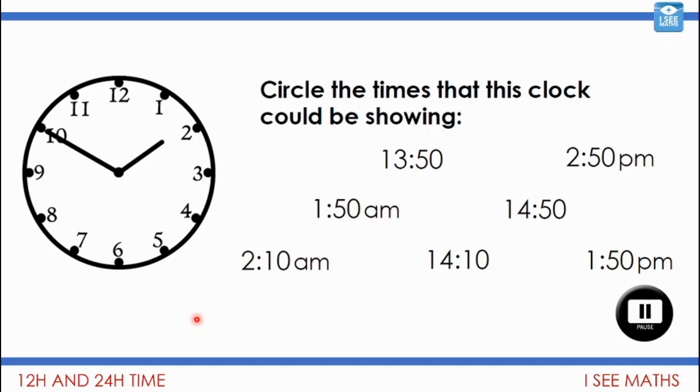Let's have a look at the times it could be. I'm gonna cross off 2:10 and 14:10. I know it's not that. The minute hand is pointing at the 10, but of course that's 10 lots of five—50 minutes—so it's got to be one of these times with a 50, not one of the times with a 10. And then I guess I just need to look at this hour hand. The hour hand is between one and two.